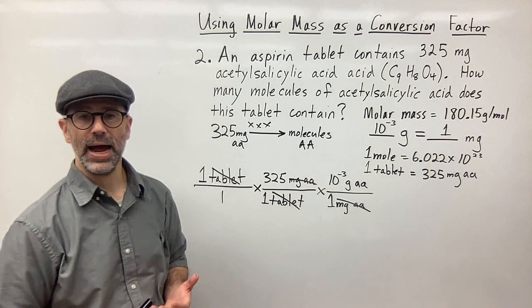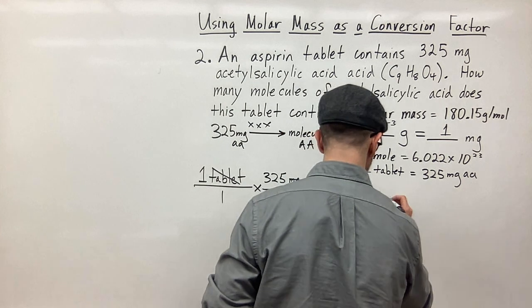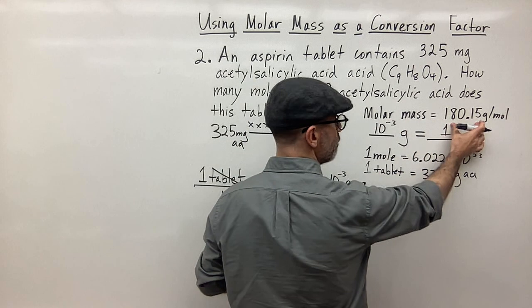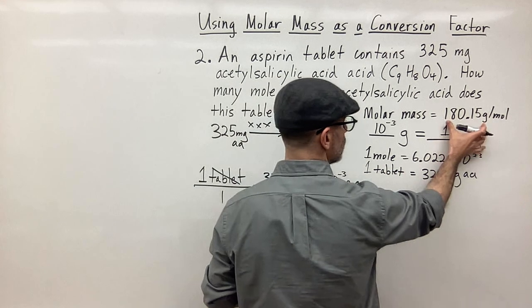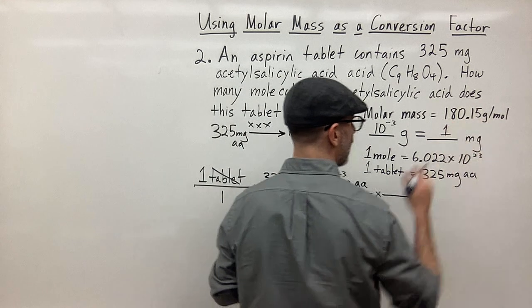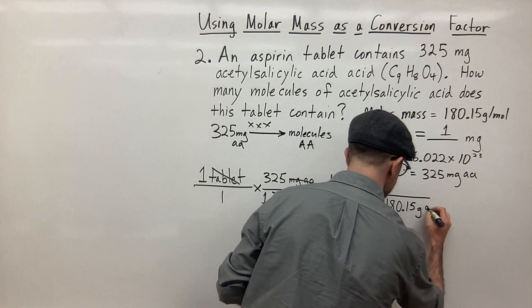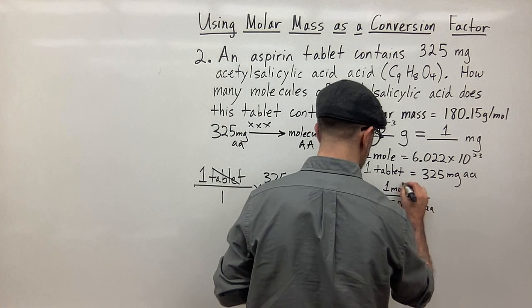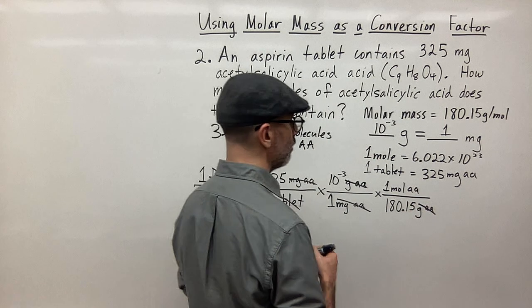Now I can use my molar mass to convert to moles. The molar mass is 180.15 grams per mole. I have grams on top, so I put 180.15 grams of AA on the bottom and one mole of AA on top. Grams of AA cancel out and now I have moles.